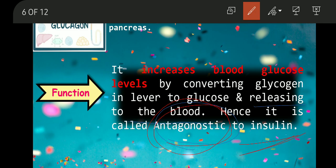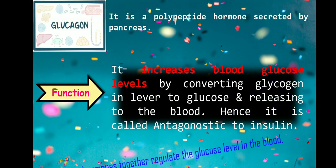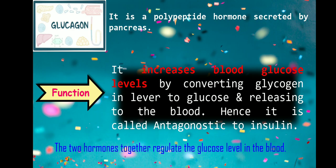Because glucagon's action is opposite to that of insulin, it is called antagonistic to insulin. Together, insulin and glucagon regulate glucose level in the blood: glucagon increases blood glucose level and insulin decreases blood glucose level. So these two hormones together regulate glucose level in the blood.